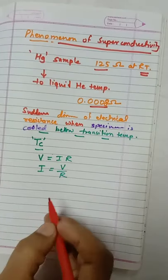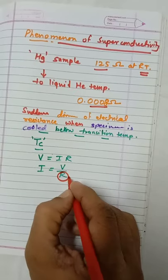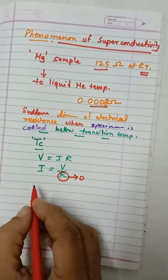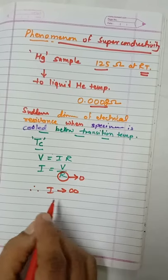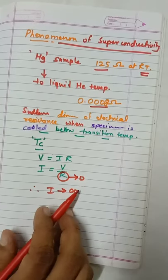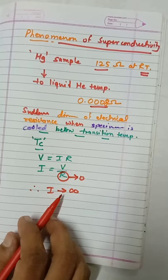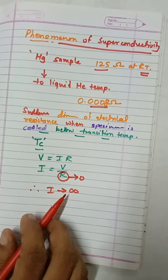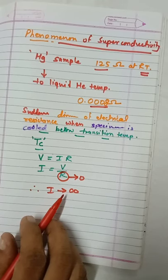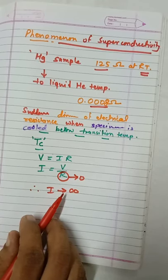If resistance vanishes, means resistance tends to zero, definitely I will be tending to infinity. Therefore, current of very high magnitude will flow through the specimen. As a result of that, the corresponding changes in producing the magnetic field of very high intensity will be possible.